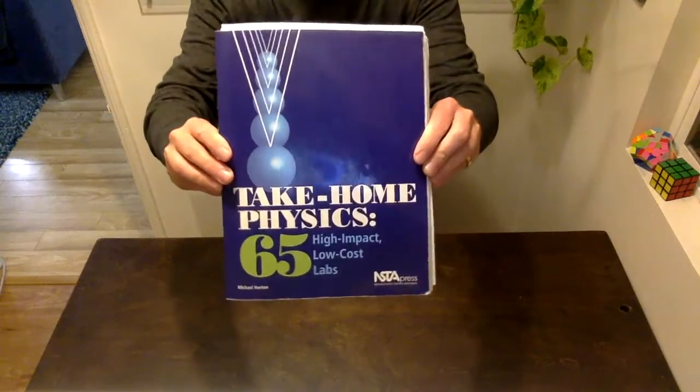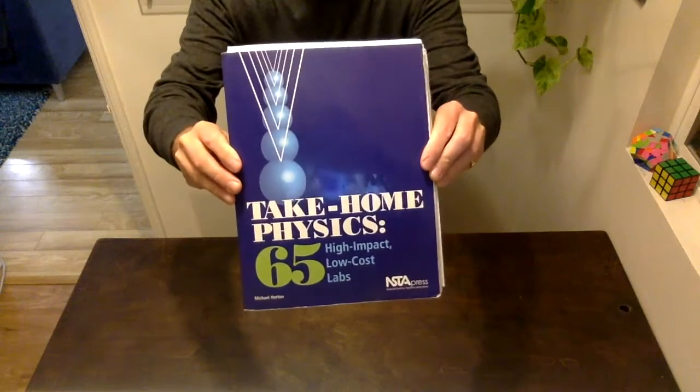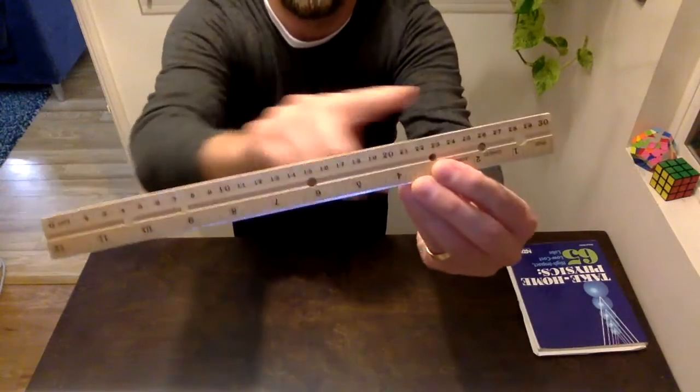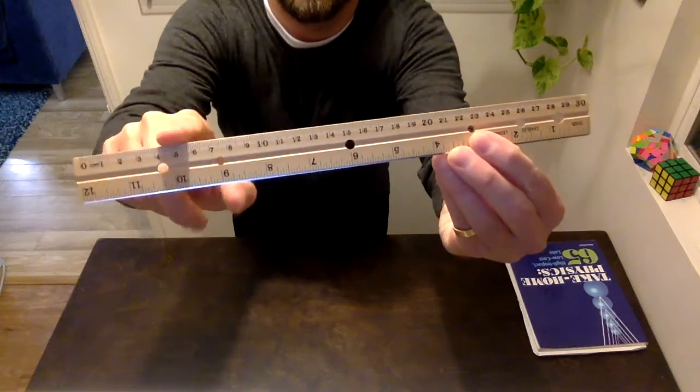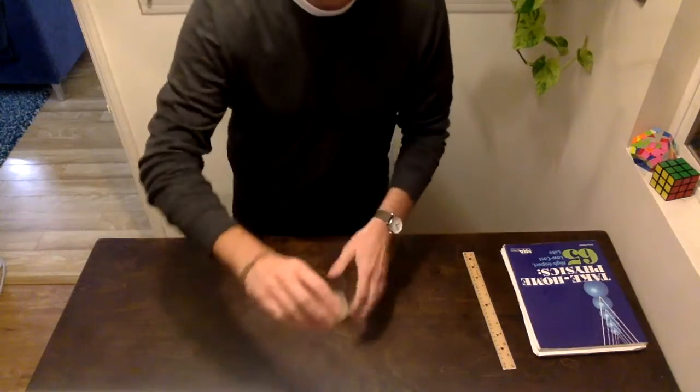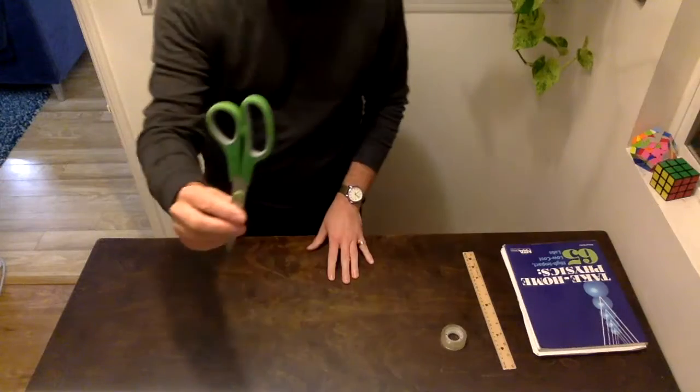Hello scientists, this is the walkthrough video for Lab 11 from Take Home Physics. Go ahead and grab a ruler - we're going to be using the centimeter side - a roll of clear plastic tape, some scissors.